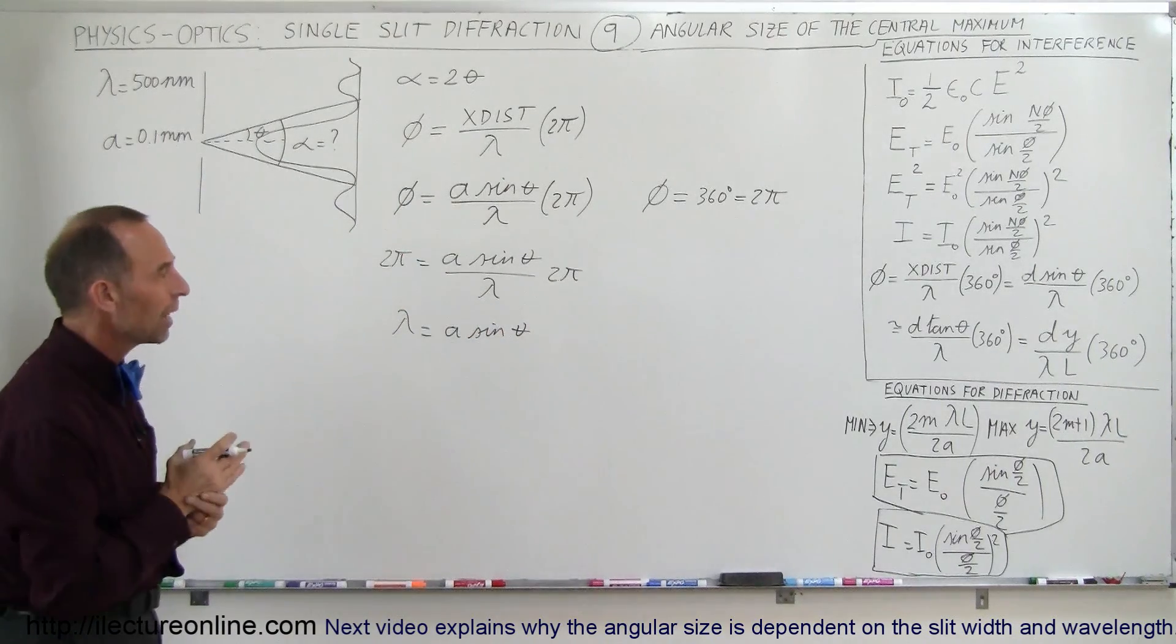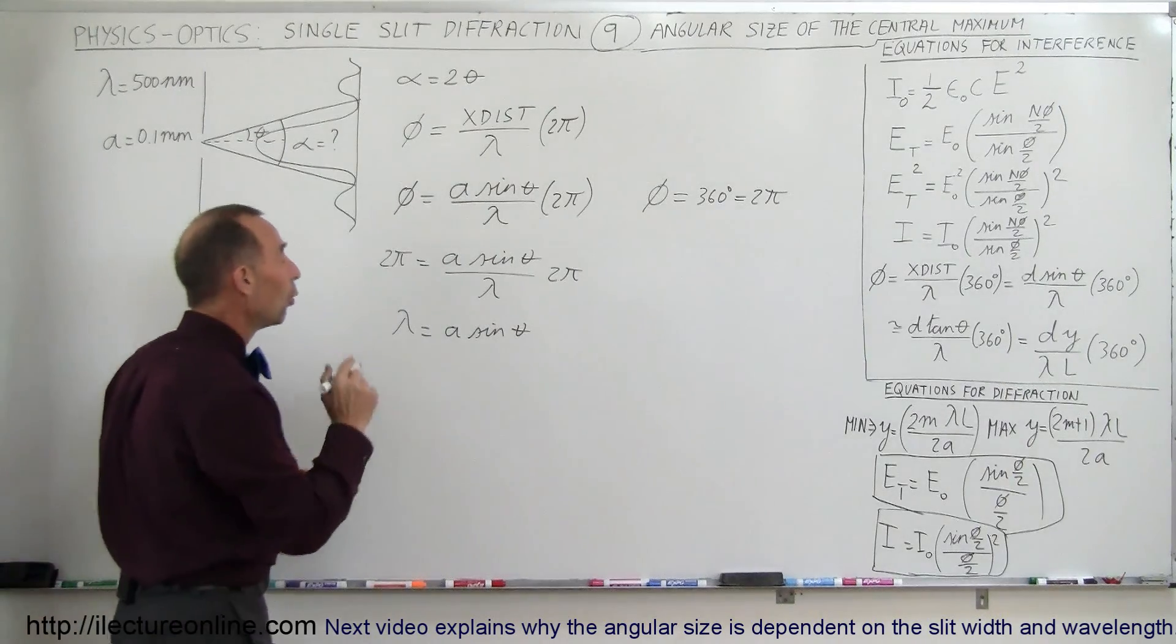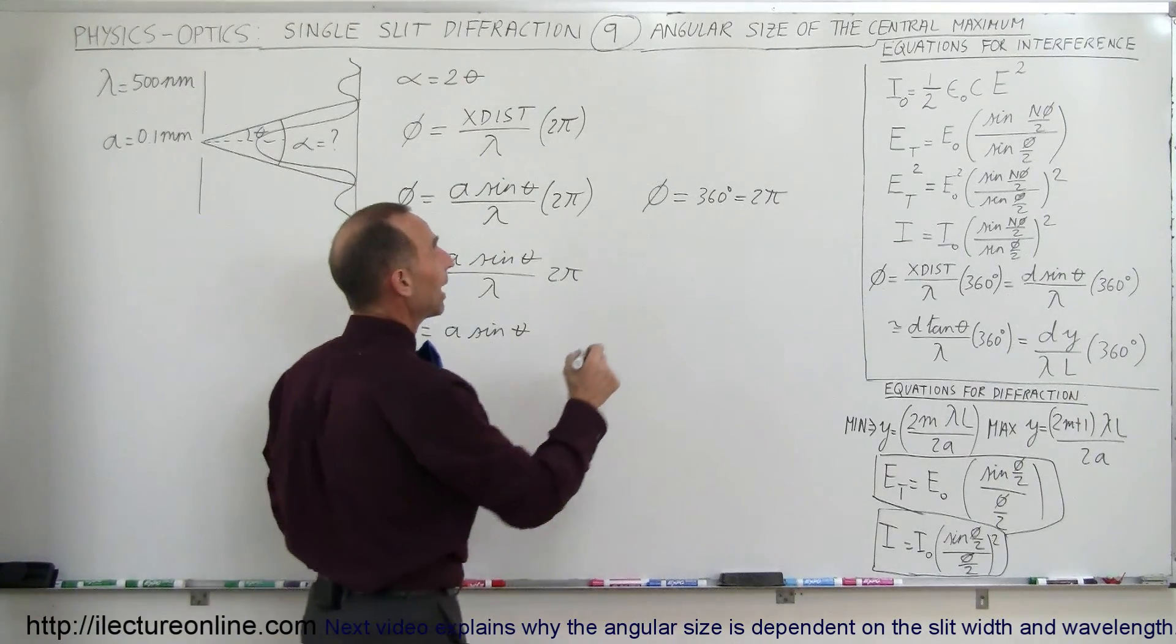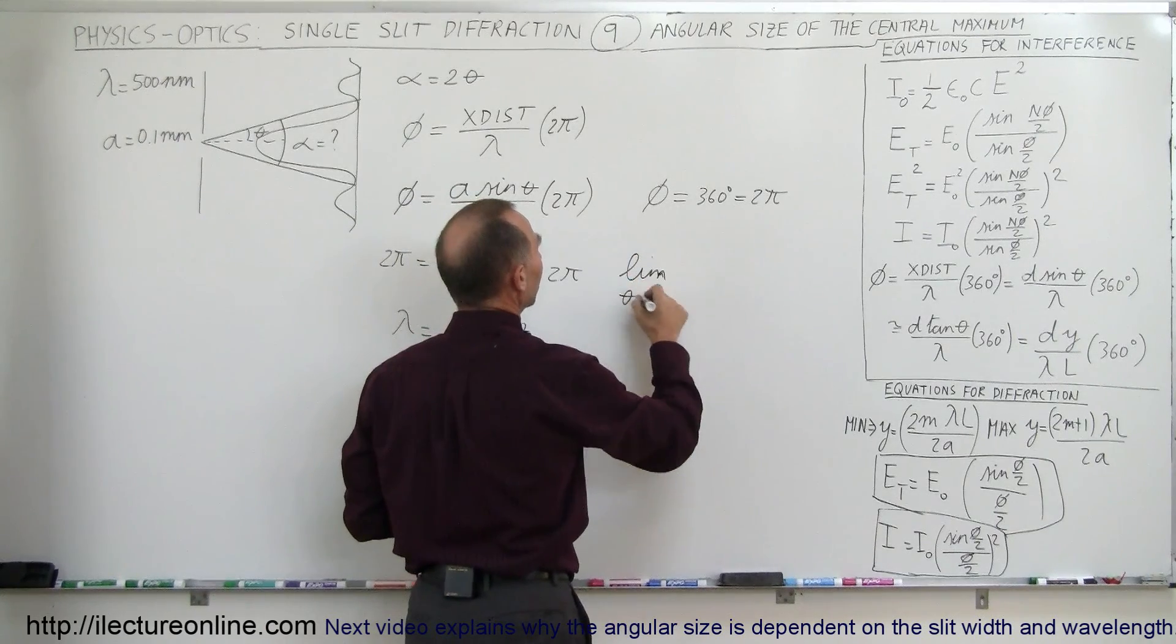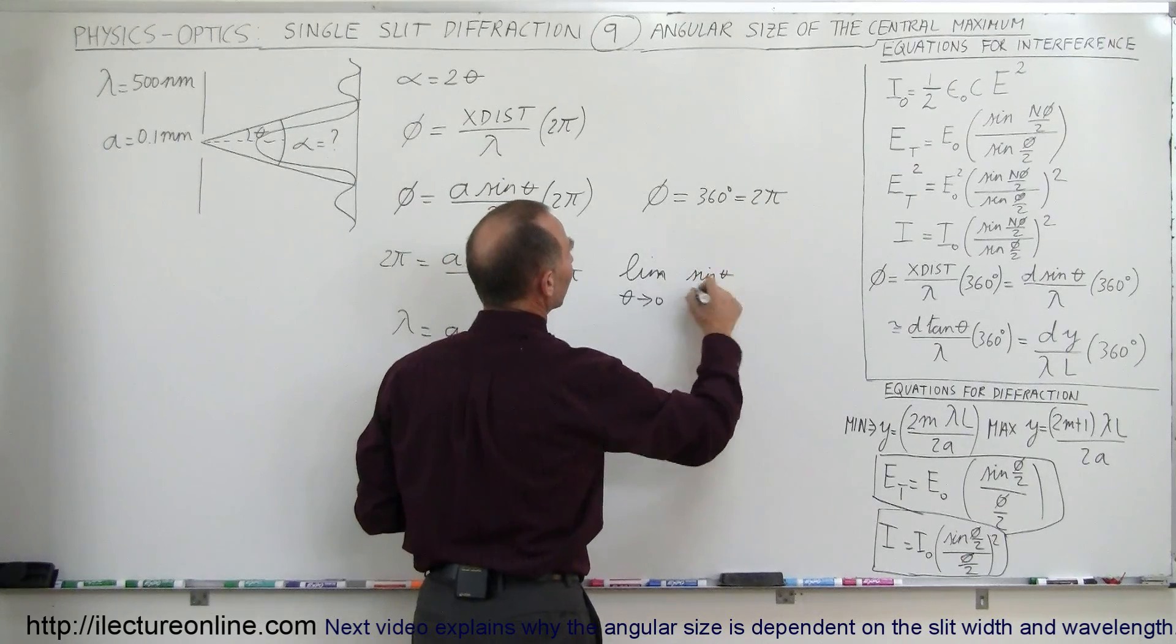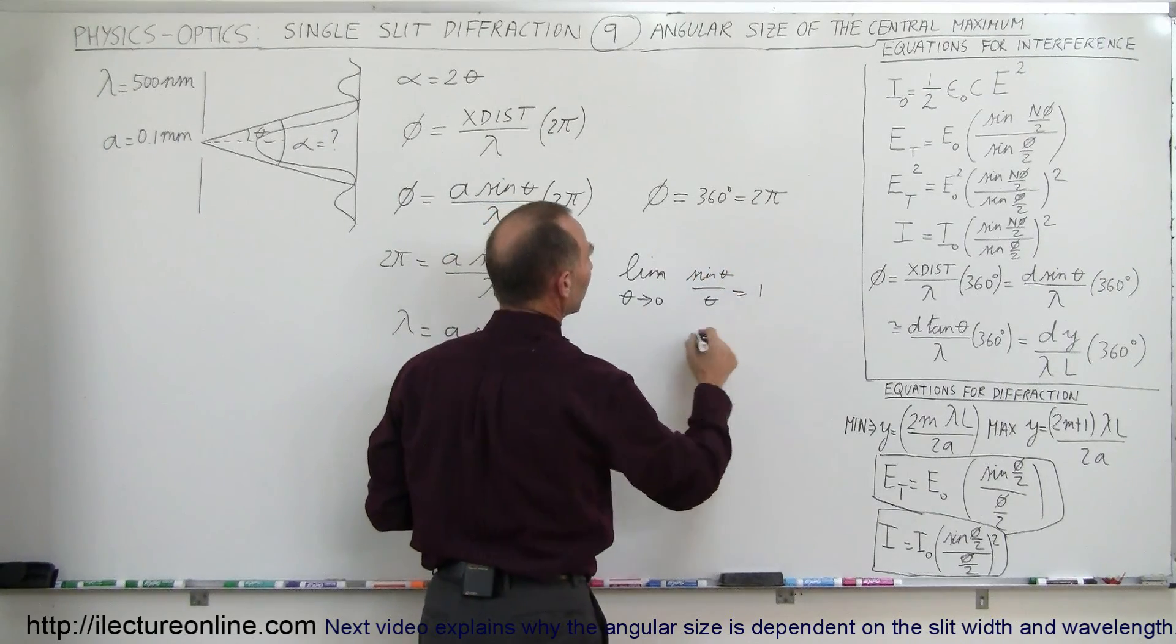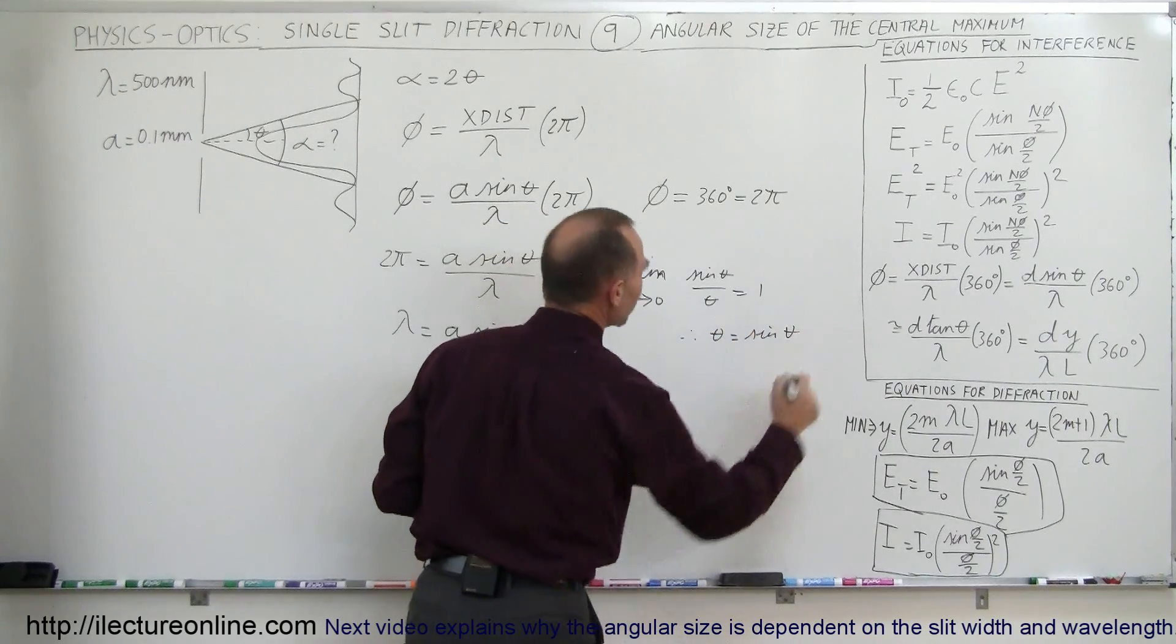Now, of course we're dealing with very small angles here, so therefore the sine of theta equals the tangent of theta. Or what we can also say is that in the limit as theta goes to 0, we can say that the sine of theta divided by theta is equal to 1, which implies that theta is equal to the sine of theta.